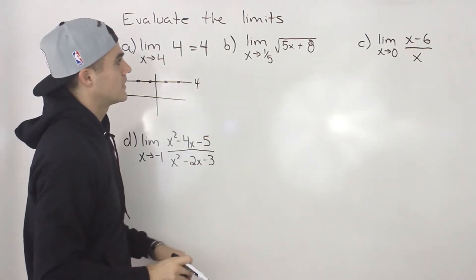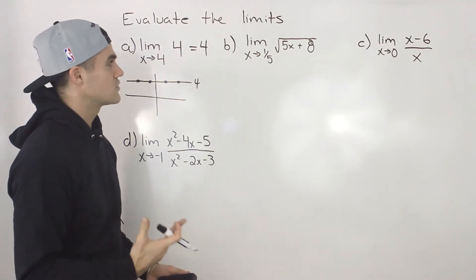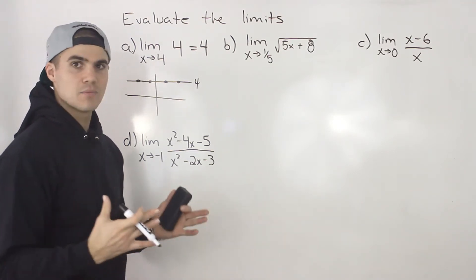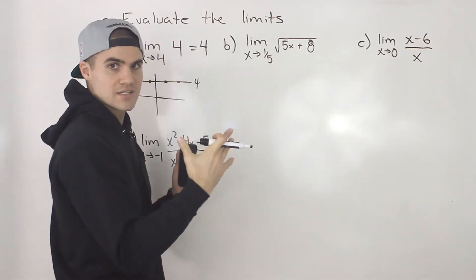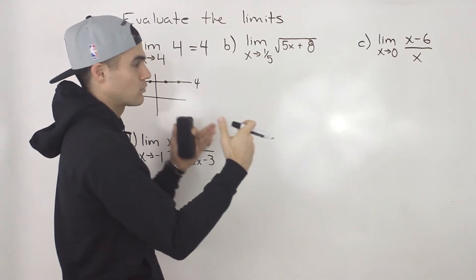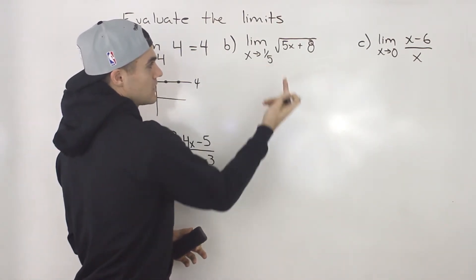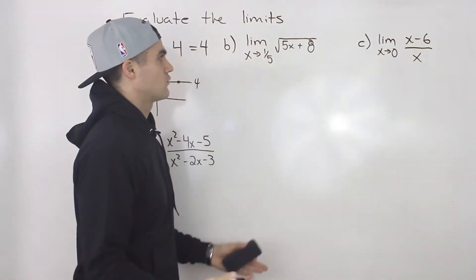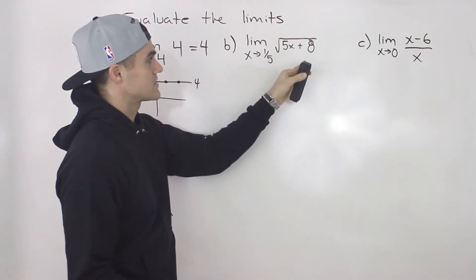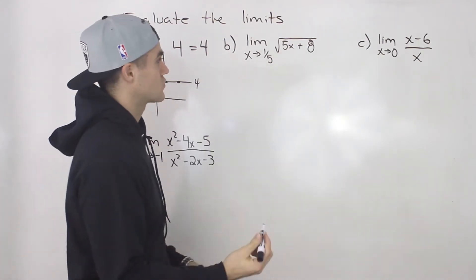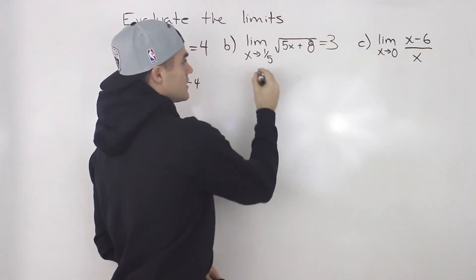Next, we have the limit as x approaches 1/5 of the square root of 5x plus 8. The first thing you want to check with limits is: can you make a direct substitution? Because if you can, the function is continuous at that point and it's going to approach that y value from both sides. Notice we can make a direct substitution here. Plugging in 1/5: 5 times 1/5 gives us 1, plus 8 is 9, and the square root of 9 is just 3. So the answer to this limit is 3.